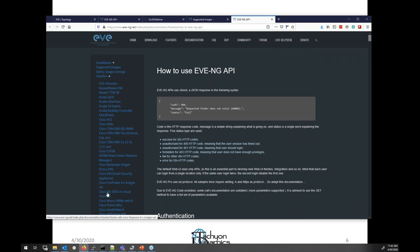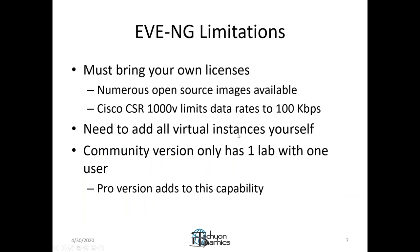The how-to section covers all those virtual appliances, which is one of those limitations you need to be aware of. Unless you're using something like CloudMyLab, which is one instance of EVE-NG that has all of the server and appliance instances pre-loaded, you really have to bring your own licenses and your own virtual instances. There are a lot of open source images available without having to pay, but if you're using something like Cisco CSR-1000V on an evaluation license, it limits you to 100 kilobits per second data rate — so you can't really run production tests unless you have the proper licenses.